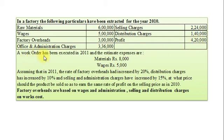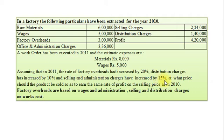A work order has been executed in 2011, and the estimated expenses are: Materials Rs. 8,000 and Wages Rs. 5,000. Assuming that in 2011, the rate of factory overheads had increased by 20%, distribution charges increased by 10%, and selling and administration charges increased by 15%. At what price should the product be sold to earn the same rate of profit on selling price as in 2010? Factory overheads are based on wages, and administration, selling and distribution charges are based on works cost.